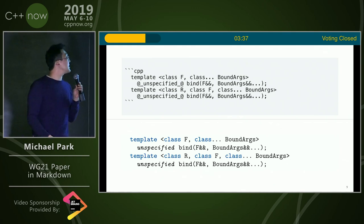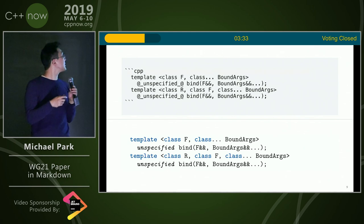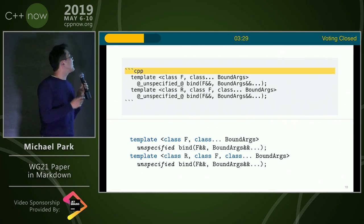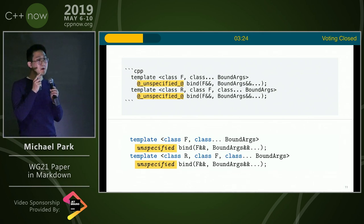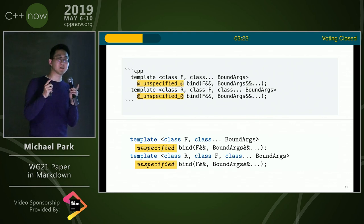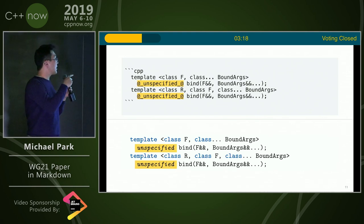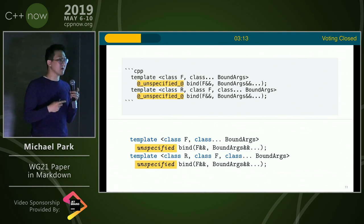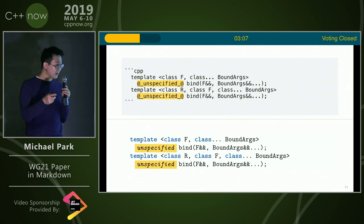For code samples, you write your Markdown code block with syntax highlighting for CPP and you get something like that. A feature I implemented specifically for this is to wrap things inside a code block with at symbols, which lets you jump back into Markdown world. So you can italicize parts of code for exposition only and things like that — you can jump back into Markdown to customize things inside verbatim mode.